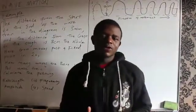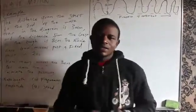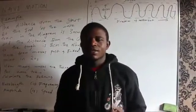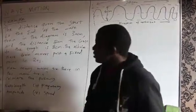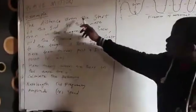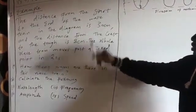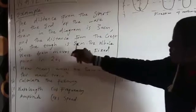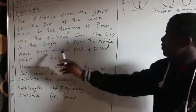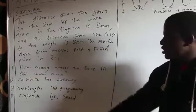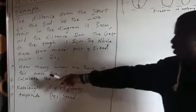Today in wave motion we're going to look at an example. We're going to calculate the wavelength, the speed, the frequency, and the amplitude. The example reads: the distance from the start to the end of the wave train in the diagram is 30 centimetres, the distance from the crest to the trough is 8 centimetres, and the whole wave train moves past a fixed point in 20 seconds. Question A: how many waves are there in this wave train?